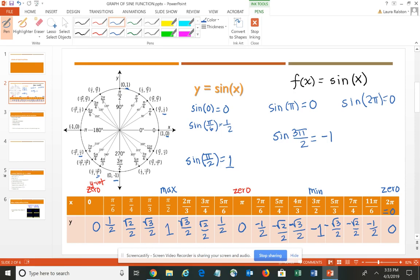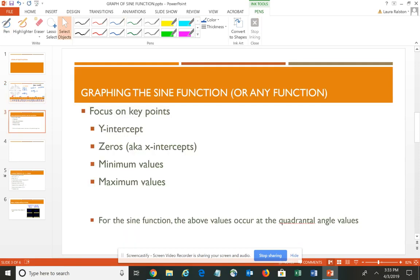And I pointed out those points where you have 0's and the maximum and the minimum because those are typically the points that we focus on at least initially when we're trying to create the graph of the sine curve. As you get ready to graph the sine function or really any function, you want to focus on your key points. And typically those key points are going to be your y-intercept, your 0's which are also known as your x-intercepts, your minimum values, and your maximum values. And for the sine function, those particular values typically occur at your quadrantal angle values.